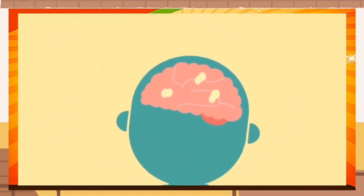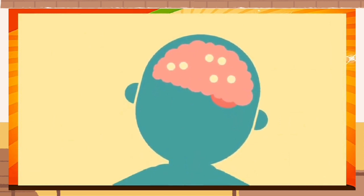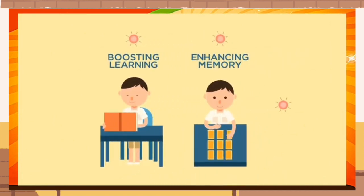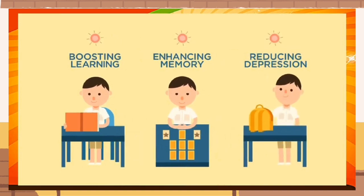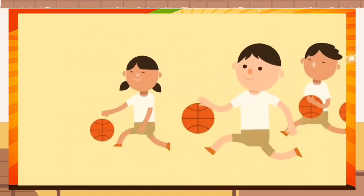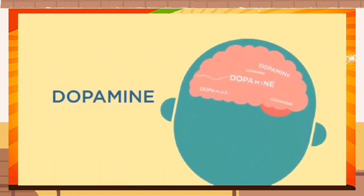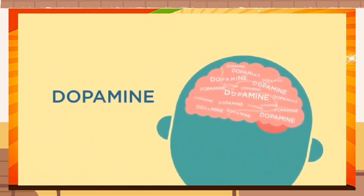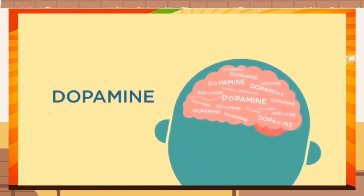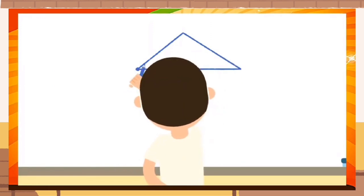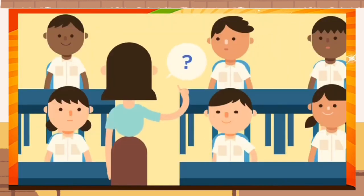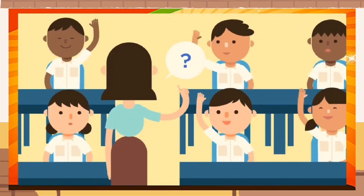When we move, our brain is encouraged to grow new cells. These brain cells are responsible for boosting learning, enhancing memory, and even reducing depression. Exercise, in particular sports, also stimulates the production of dopamine, a chemical in the brain which makes us happier and more receptive to learning. And movement helps us pay attention, which in turn speeds up the learning process. That's exactly how our children's brains benefit from P.E.